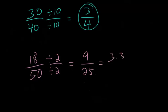Since 9 is a product of 3 and 3, and 25 is a product of 5 and 5, we can't make any cancellations here. So 9 25ths is as simple as we can make this.